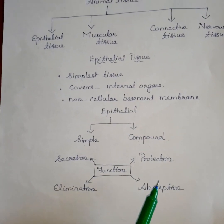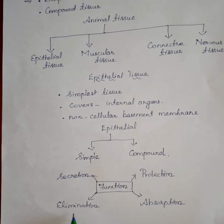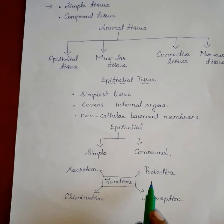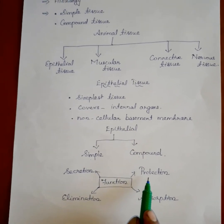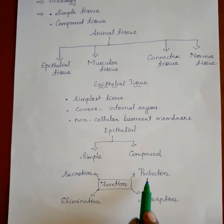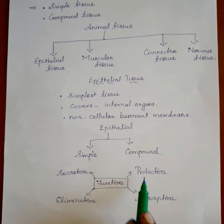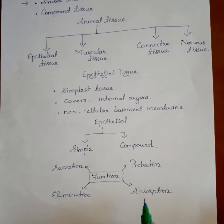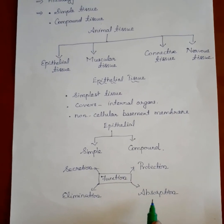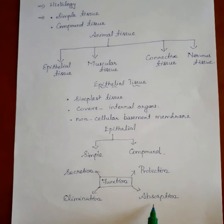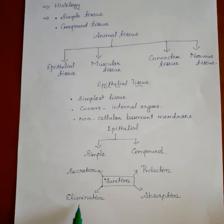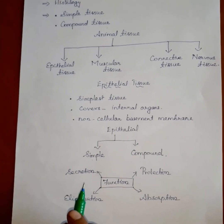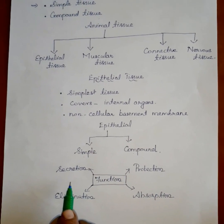The functions of epithelial tissue are: protection, absorption, elimination, and secretion. It protects the skin and outer covering of the body, and protects cells from drying and microbial infection. It helps absorb water and nutrients, eliminates waste products, and performs secretory functions.